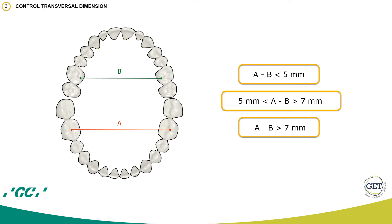After measuring the discrepancy and integrating the correction for dentoalveolar compensation, you will have basically three kinds of scenarios: a discrepancy of less than 5 mm, a discrepancy of more than 7 mm, and a discrepancy between 5 and 7 mm.